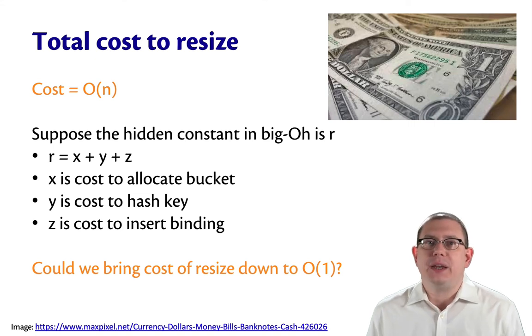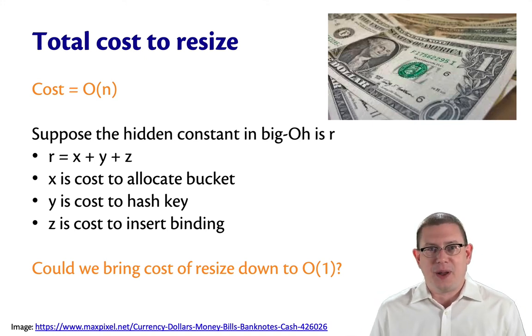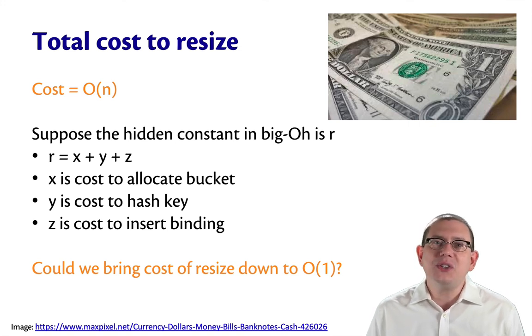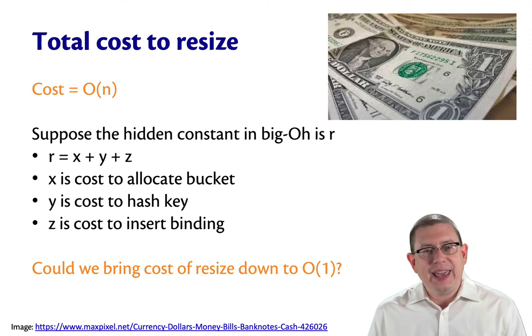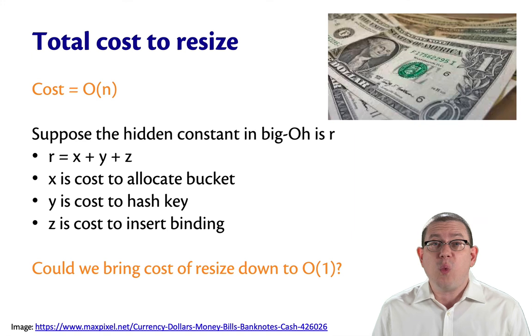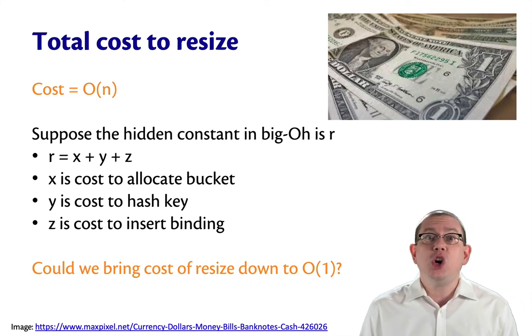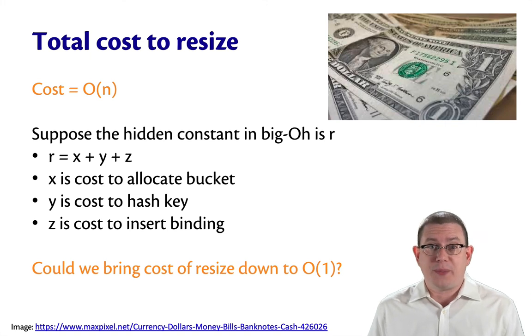Now, the whole reason we got into implementing hash tables was that we wanted constant time performance. And we lost it here. We blew it on this insert operation. So, here's the question. Can we get the cost of all of this resizing down to big O of 1? Can we somehow bring it down to constant cost? Because if we could, then we would have what we set out to achieve. The best of both worlds between an association list representation of maps and a direct address table representation of maps.